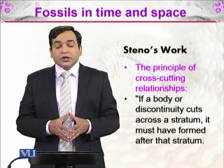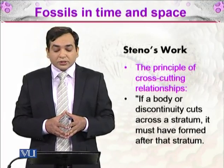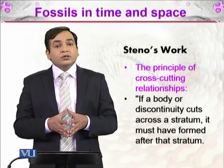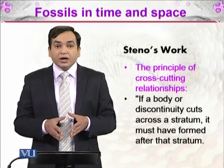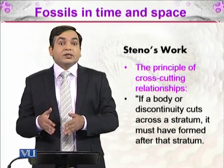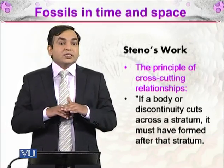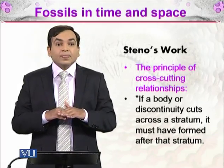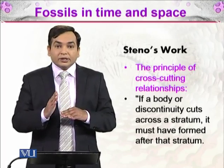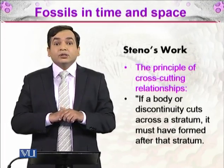Steno also gave the idea of cross-cutting relationships: if a body or discontinuity cuts across a stratum, it must have formed after that stratum. This gives us the idea of relative aging. The horizontal layers are older than the vertical ones, so organisms found in horizontal layers can be identified as older than those found in vertical layers.